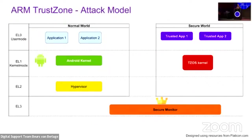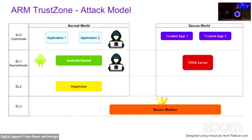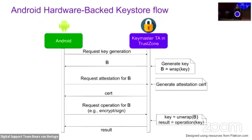ARM TrustZone provides a logical separation into two worlds: the normal world which runs Android, and the secure world, the trusted OS. We follow the Android platform security model, which states that the hardware protection of cryptographic keys should withstand a completely compromised normal world. The Android KeyStore, designed by Google, provides cryptographic key management using the Keymaster trusted application in TrustZone. Applications can ask for key generation, and the Keymaster will generate the keys in secure hardware, encrypted with a hardware-derived key, and return the blobs to the application.